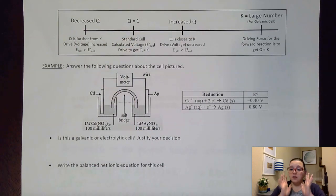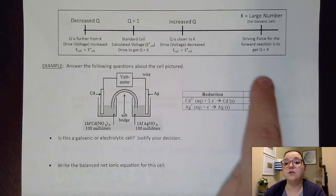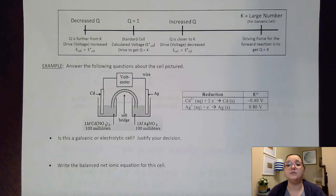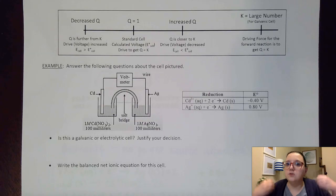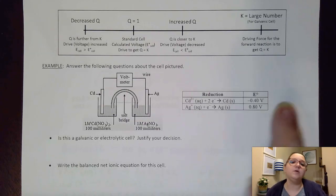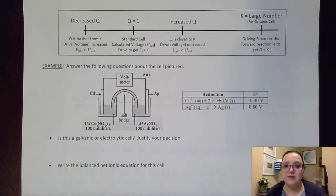To clarify: anytime we use the standard calculation, we are calculating the standard cell potential. You do not have to calculate the new voltage at non-standard concentrations, but you will need to say whether it's larger or smaller than your calculated standard value. With that, let's jump into some examples.